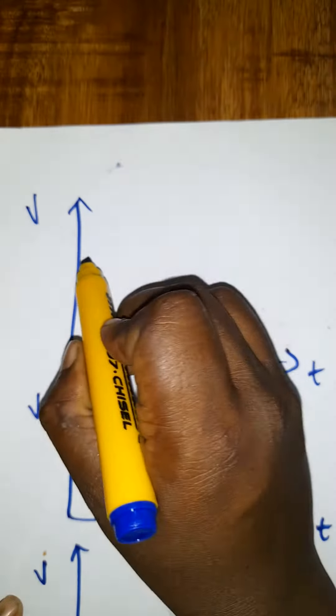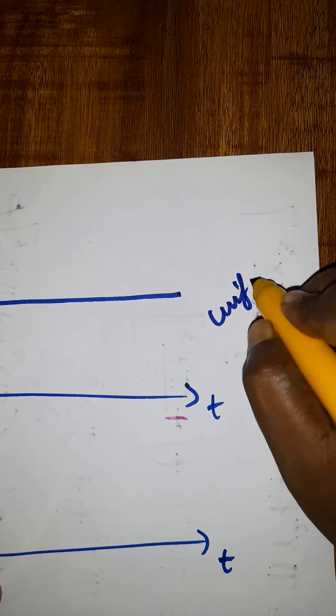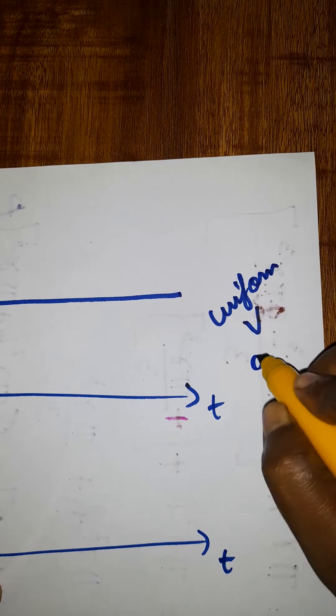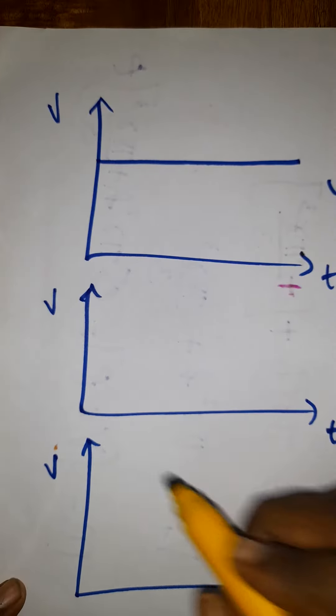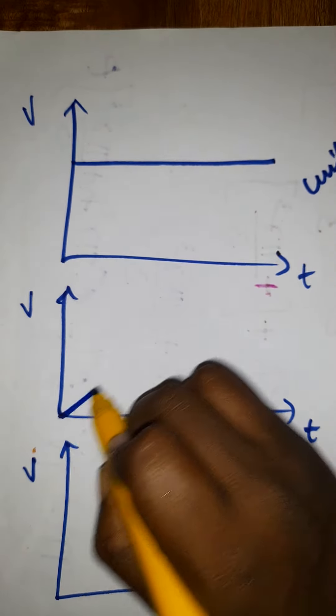When it's maintaining constant, you can take it as uniform velocity. The acceleration here will be zero. In a velocity versus time graph, when the velocity is increasing with respect to time,